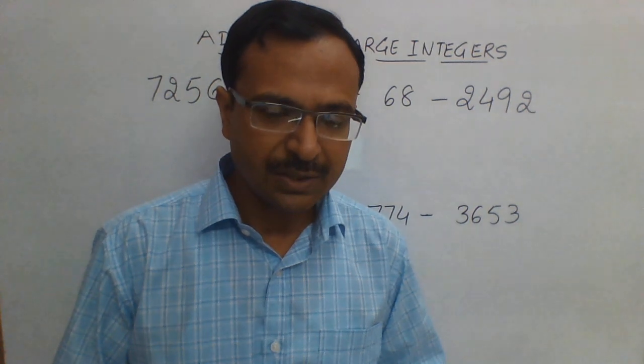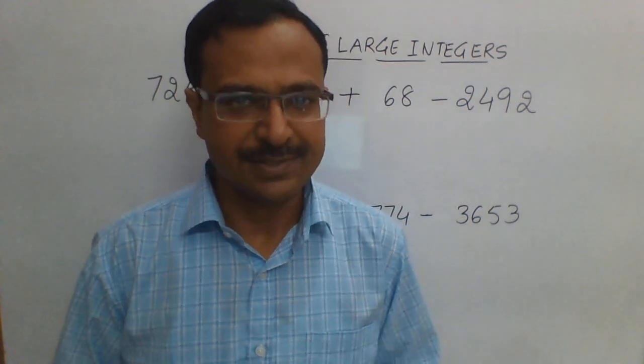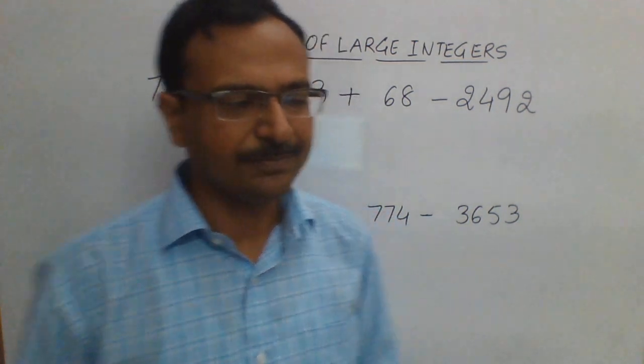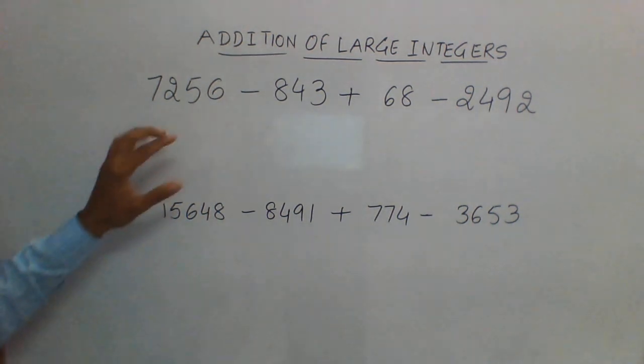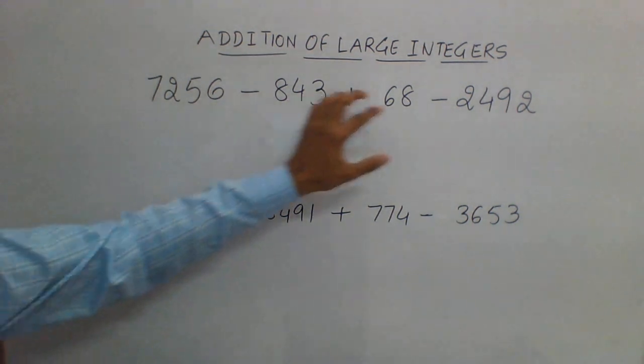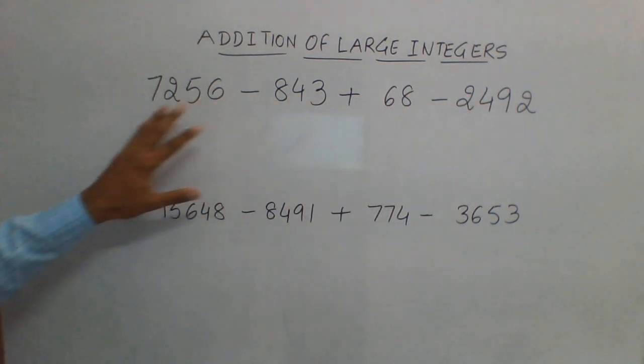So how do we find the best way of solving this? Let's see the first question. Here we have 4 digits, then 3, then 2, and 4, so the maximum number of digits are 4. What I do first is convert everything into a 4-digit number.